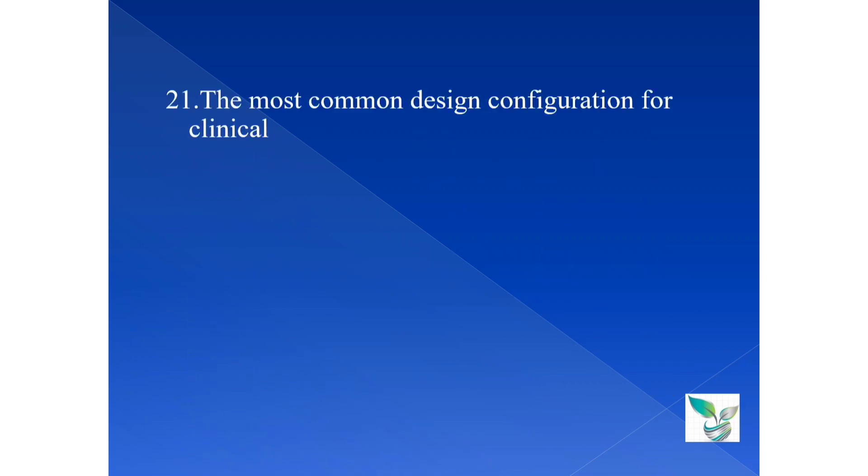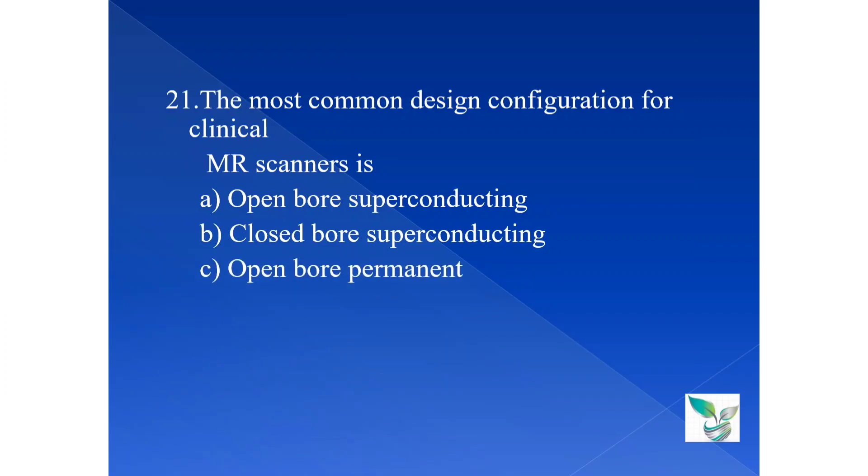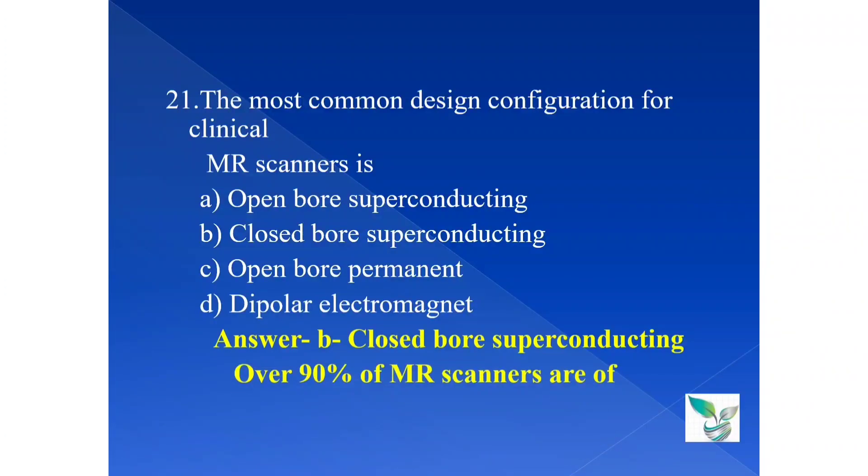Moving on to the 21st question. The most common design configuration for clinical MRI scanners is option A often bore superconducting, option B closed bore superconducting, option C often bore permanent and option D bipolar electromagnet. The answer is option B closed bore superconducting. So let us see the explanation. Over 90% of MRI scanners are of closed bore superconducting.